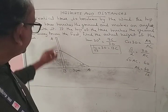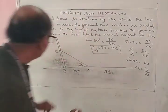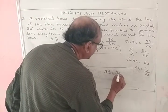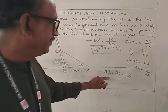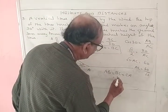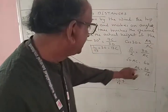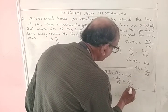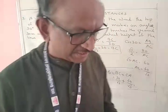Therefore BC plus AC is the actual height of the tree. Actual height is AB. AB is equal to BC plus CA. BC is 30 by root 3 and AC is 60 by root 3. Find the final answer using a calculator.